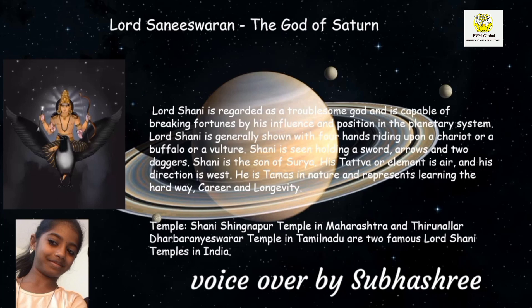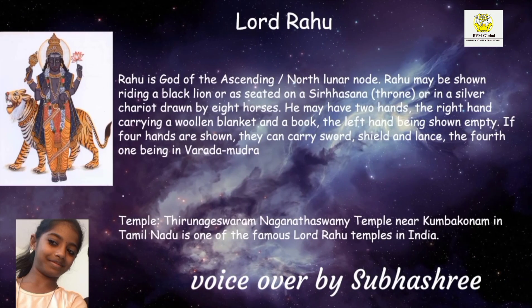Shani is the son of Surya; his element is air and his direction is west. He is Tamas in nature and represents learning the hard way, career and longevity. Lord Rahu is the god of the ascending north lunar node. Rahu may be shown riding a black lion or seated on a throne, or in a silver chariot drawn by eight horses. He may have two hands — the right holding a woolen blanket and a book — or four hands carrying a sword, shield, lance and Varada Mudra.